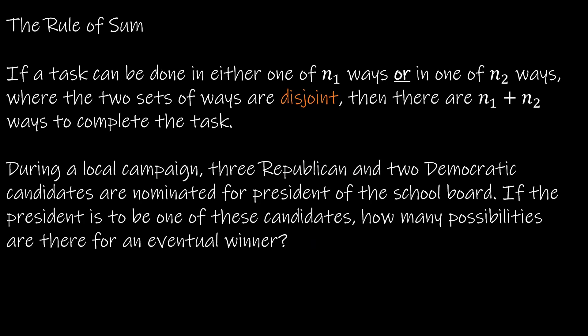This brings us to the official rule of sum. The rule of sum says if a task can be done in either one of n1 ways or in one of n2 ways where the two ways are disjoint, which means there's not a way in n1 that's also in n2. They are separate sets. Then there are n1 plus n2 ways to complete the task. Now a couple of key things here. When you see that keyword or, that should tell you that we're using the rule of sum.